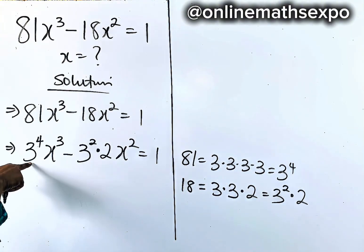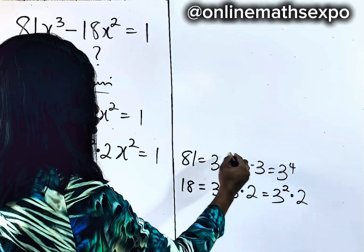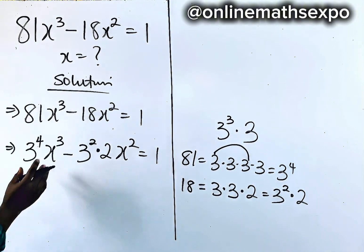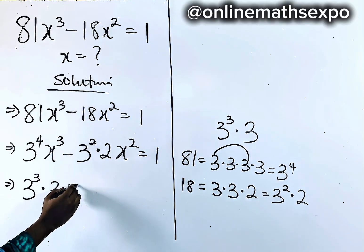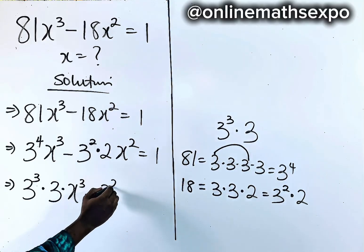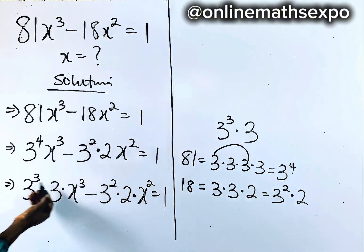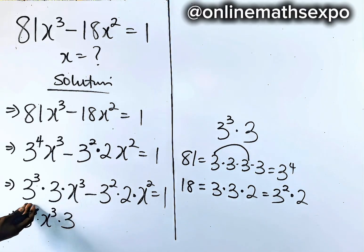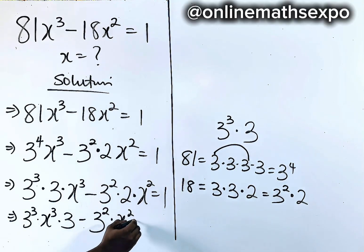Now what you need to do next is we can rewrite this to suit this power. We know that this is 3 to the power of 4, so we can have this 3 as 3 to the power of 3 multiplied by 3. So this is the same as 3 to the power of 3 multiplied by 3 multiplied by x cubed, minus 3 squared multiplied by 2 multiplied by x squared, is equal to 1. Now let's bring those with the same powers together. So we have 3 cubed multiplied by x cubed multiplied by 3, minus 3 squared multiplied by x squared multiplied by 2, is equal to 1.